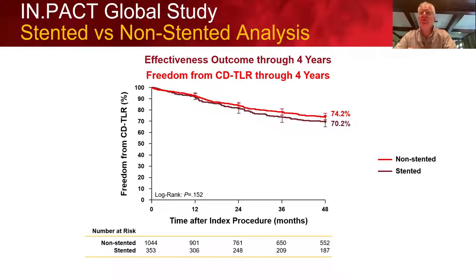Here is the key finding: how effective is it if you have to add a stent to a complex disease process? The p-value is 0.152 — no difference at four years. This is remarkable. If we need to optimize a drug-coated balloon complex disease angioplasty with stenting to get good treatment, increase MLD, get rid of the dissection — it does not appear that stenting decreases patency. Patency is what you'd see in the more optimally ballooned angioplasty group.